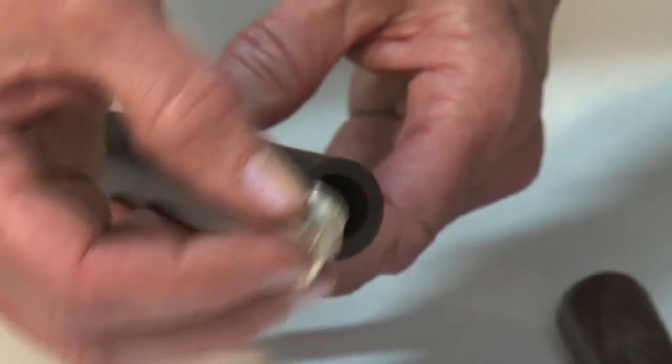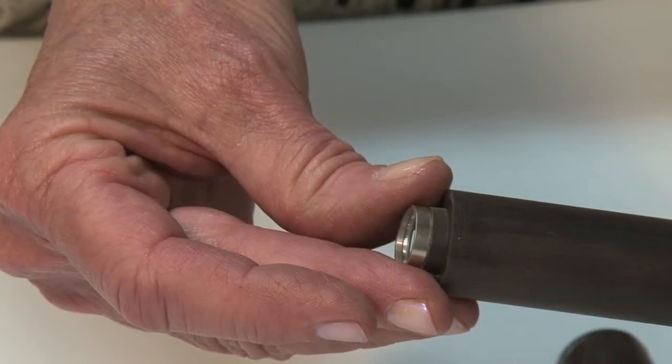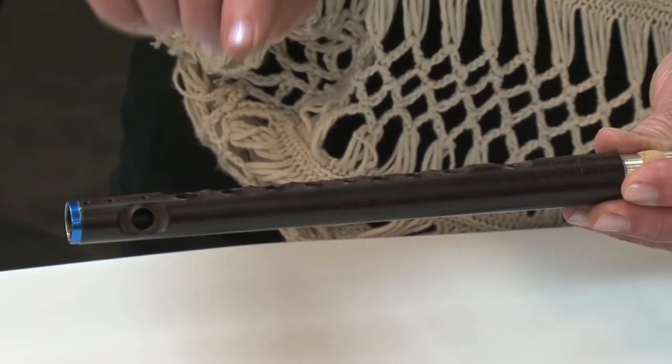Pockets and shoulders are bored to accommodate the sterling silver fittings, which will connect the body and head joint. The body is profiled and tone holes are added.